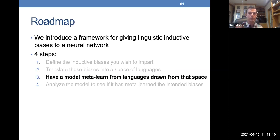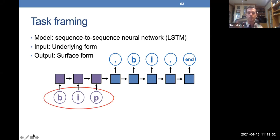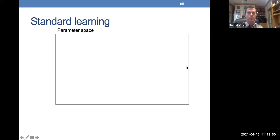Step three — the crucial step — is to have a model meta-learn from languages drawn from that space of languages. The model we use is a standard sequence-to-sequence LSTM without attention, where the input is the underlying form of a word presented one character at a time, such as B-I-P, and the output is the surface form with syllable boundary markers. Before describing meta-learning, I'll describe standard learning first, since it makes meta-learning easier to understand.